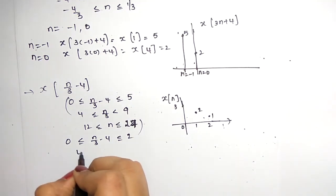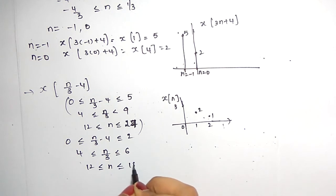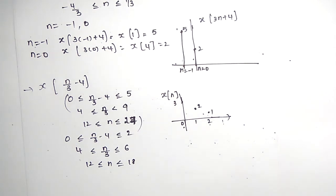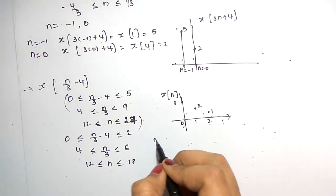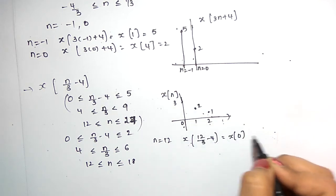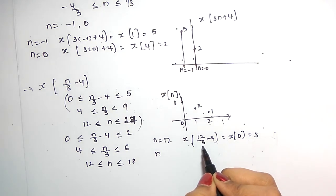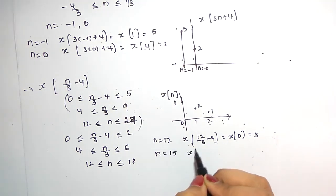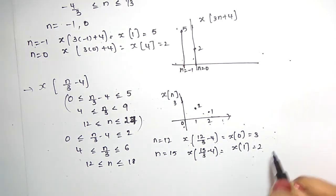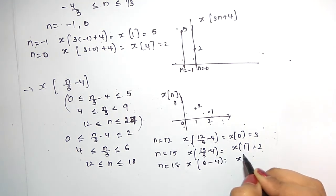This changes the range to 12 less than or equal to n less than or equal to 18. Previously you had 3 samples and now it is increased — that is called interpolation. At n equal to 12: x of 12 by 3 minus 4 equals x of 0 which equals 3. At n equal to 15: x of 15 by 3 minus 4 equals x of 1 which equals 2. At n equal to 18: x of 18 by 3 minus 4 equals x of 2 which equals 1. You should take multiples of 3 only because it has to be divided by 3.